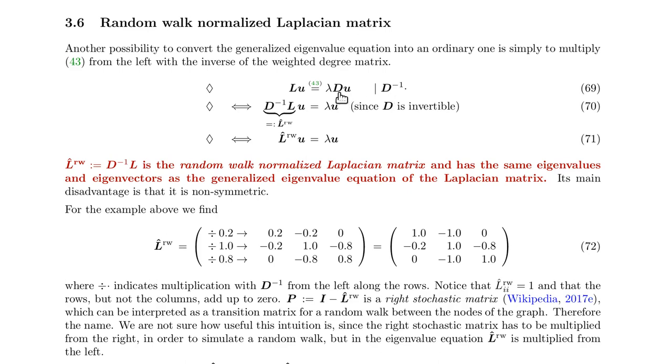If you do that, then you get rid of the D on the right side, and the matrix gets this additional D inverse, and this then is called the random walk normalized Laplacian matrix.